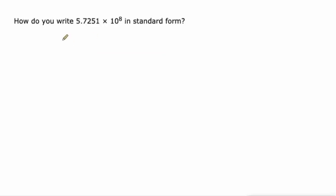So again, if I take 5.7251 and I multiply it by 10 four times, that would be 57,251. But then I still have to multiply it by 10 another four times. One, two, three, four. 572,510. So if you multiply 5 by 10 eight times, you're going to get a huge number, 572,510,000.